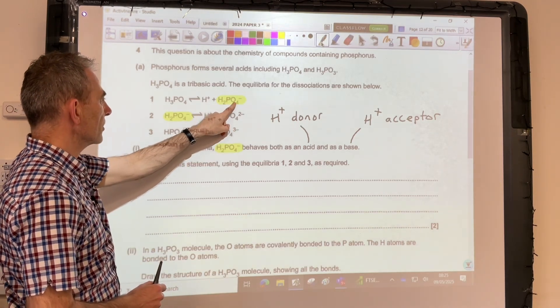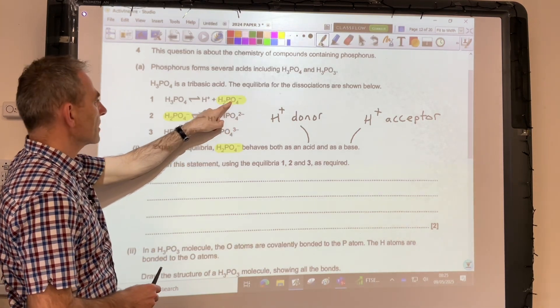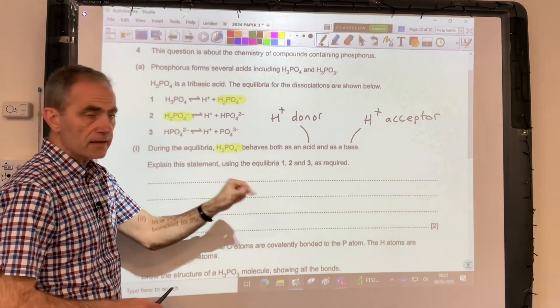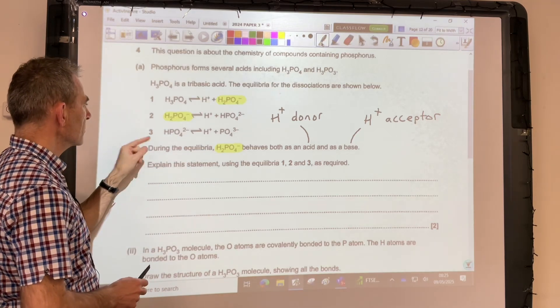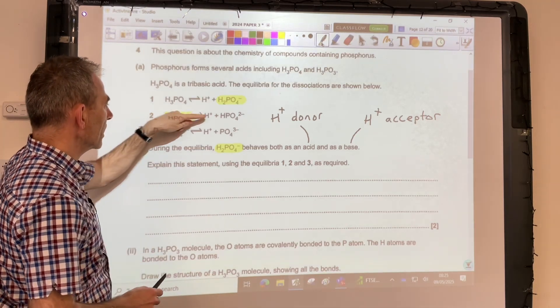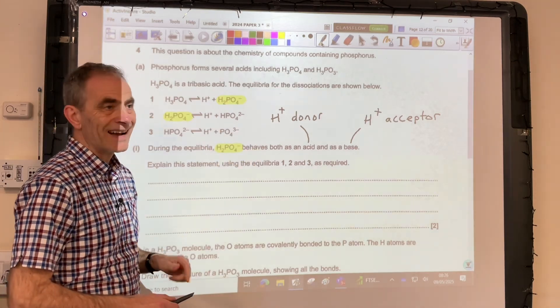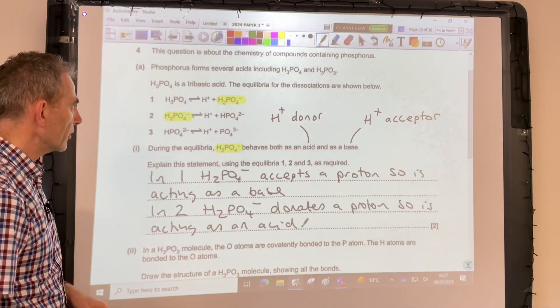So if we look at equilibrium number 1, what's this H2PO4- doing? It's accepting a proton, so in equilibrium 1, it's a base. In equilibrium 2, what's it doing? It's donating a proton. So in that equilibrium, it's acting as an acid. So there's all that written up there.